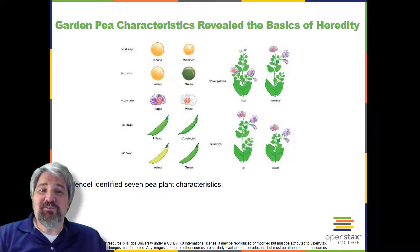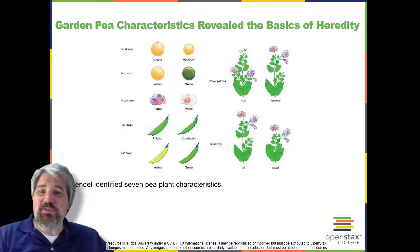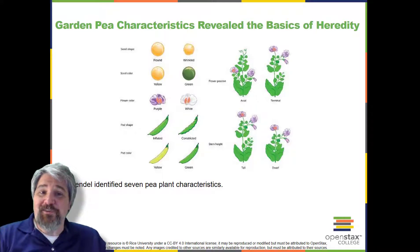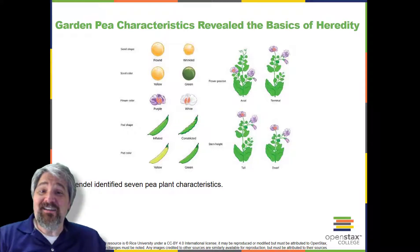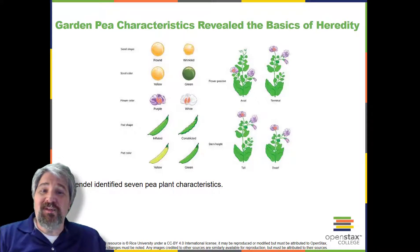Garden pea characteristics revealed the basics of heredity. In his 1865 publication, Mendel reported the results of his crosses involving seven different characteristics, each with two contrasting traits. A trait is defined as a variation in the physical appearance of a heritable characteristic. The characteristics included plant height, seed texture, seed color, flower color, pea pod size, pea pod color, and flower position. For the characteristic of flower color, for example, the two contrasting traits were white versus violet.